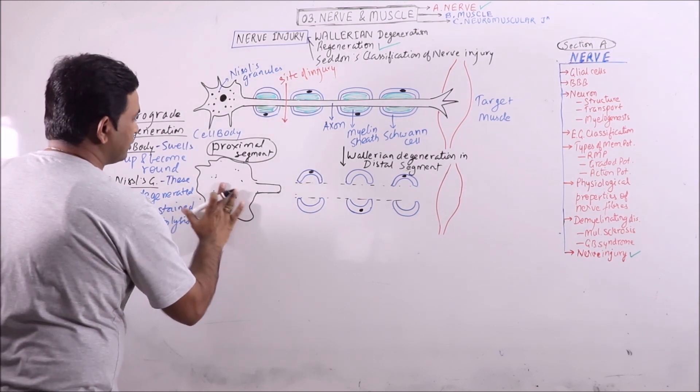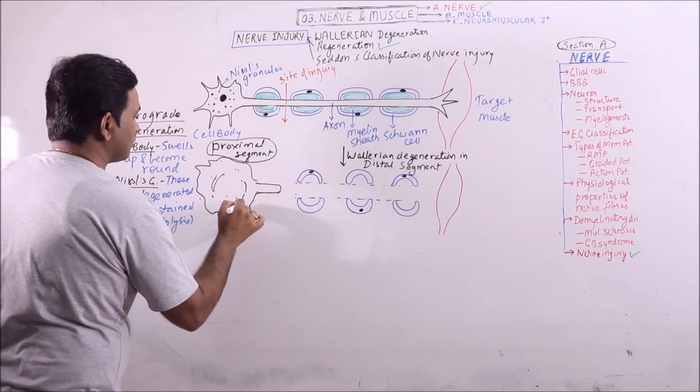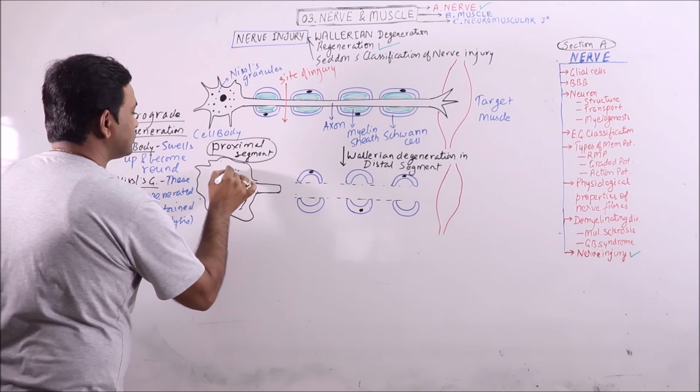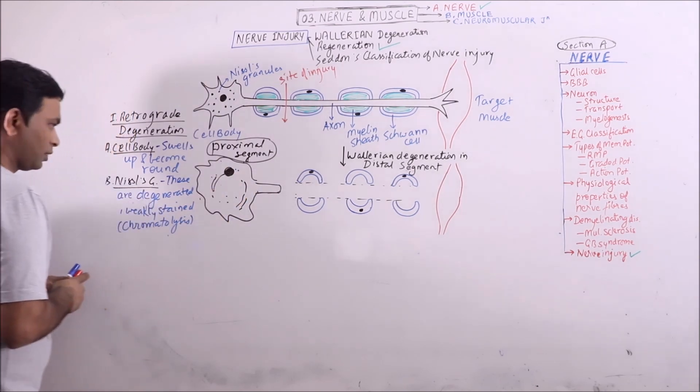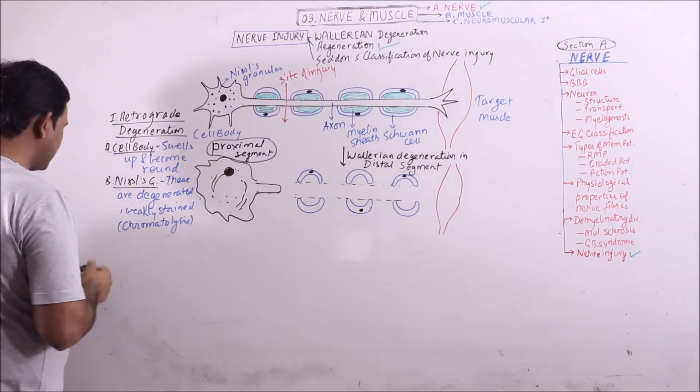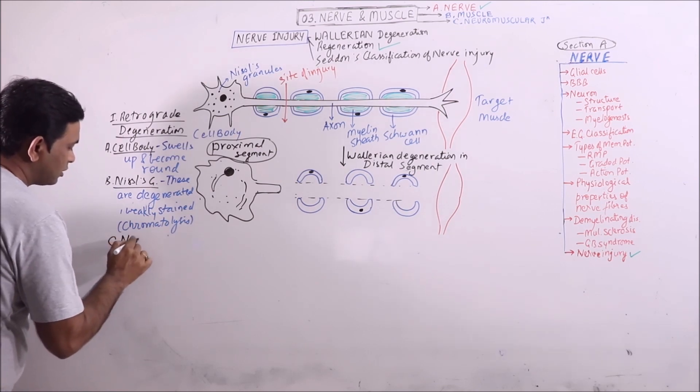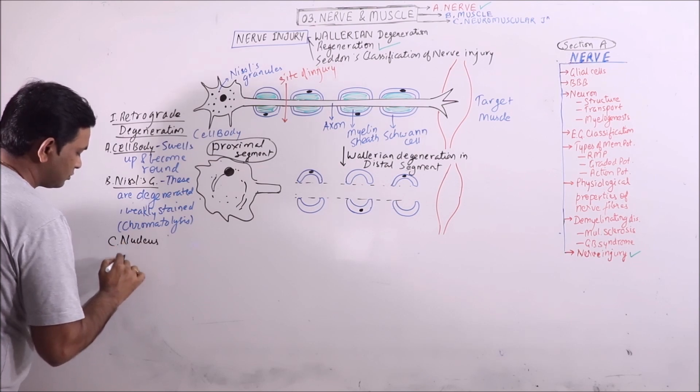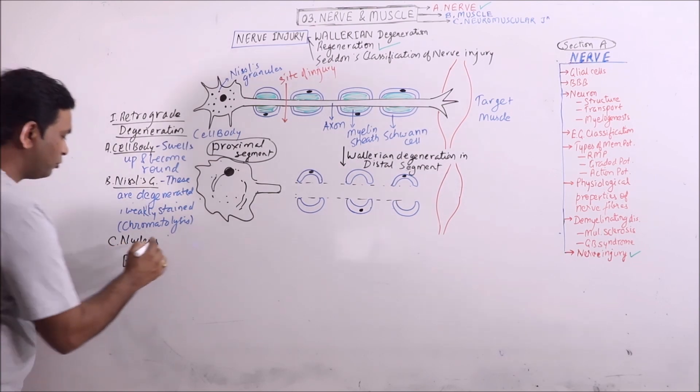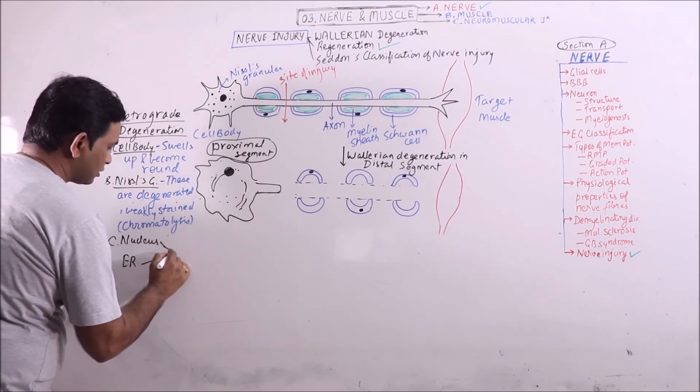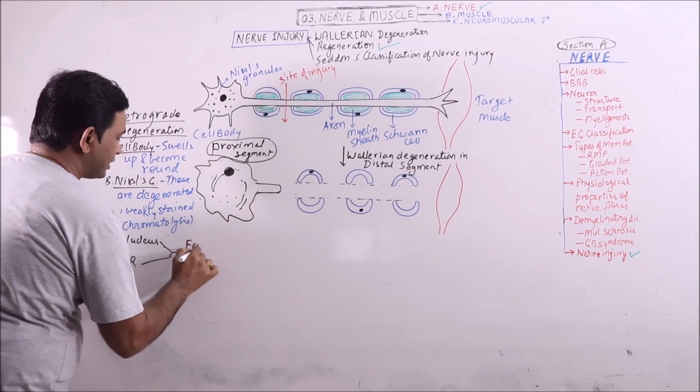The endoplasmic reticulum and the nucleus move away from the center. These are eccentrically placed. Nucleus and the endoplasmic reticulum both are eccentrically placed.